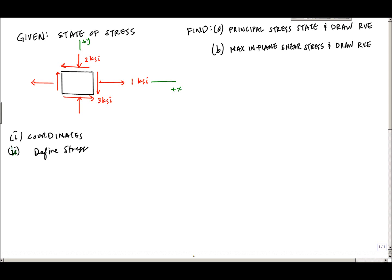The second step is to label or define the stresses. Sigma x equals positive 1 ksi because it's causing tension in the positive x direction. Sigma y is minus 2 ksi because it's causing compression on that face. For the shear stress tau xy, I'm on the x face in the negative y direction — positive times negative gives minus 3 ksi. This also checks out on the positive y face in the negative x direction, also giving minus 3 ksi.